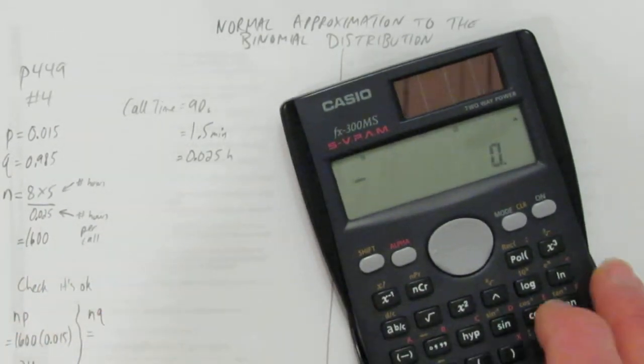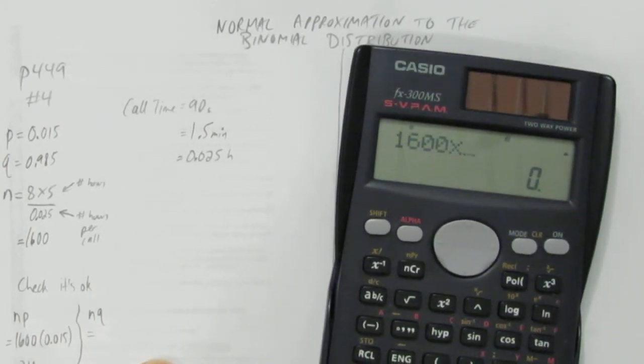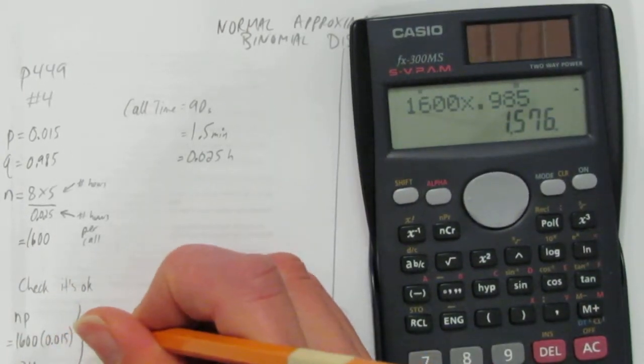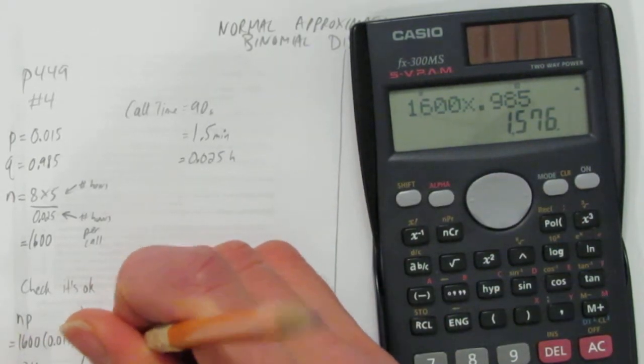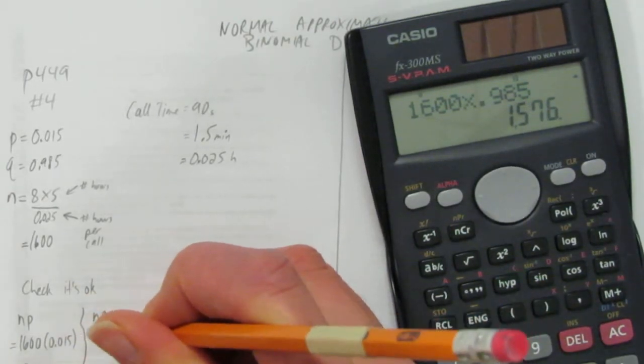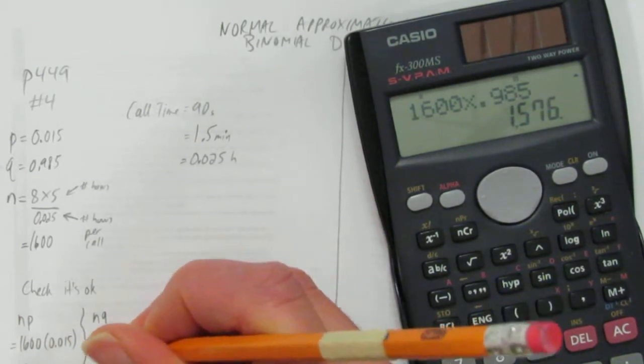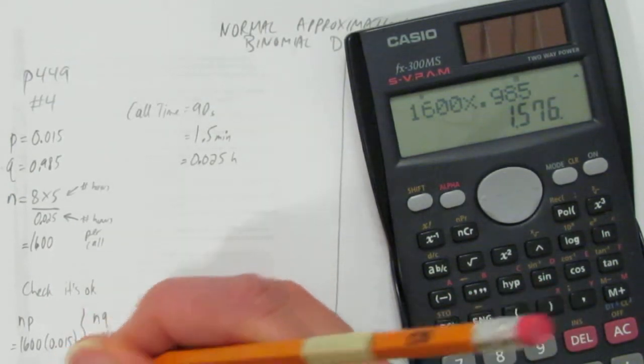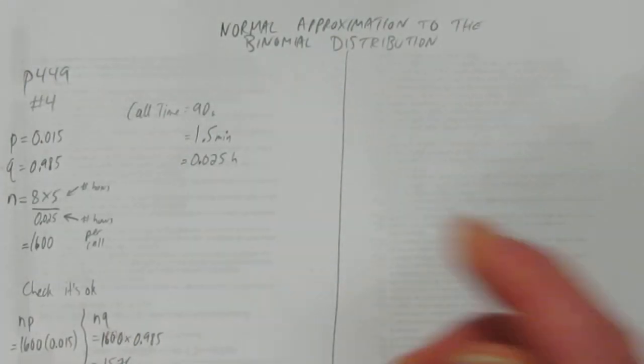Check N times Q. We already know N times Q is going to be bigger because the probability is much larger, which means it's going to for sure be bigger than 5. It's humongously bigger. But that doesn't matter. We just checked. Forgot to write down my work though. I better show that work. 1600 times 0.985 and we get bigger than or equal to 5. Since both of these are bigger than or equal to 5, we know we can use the normal approximation.